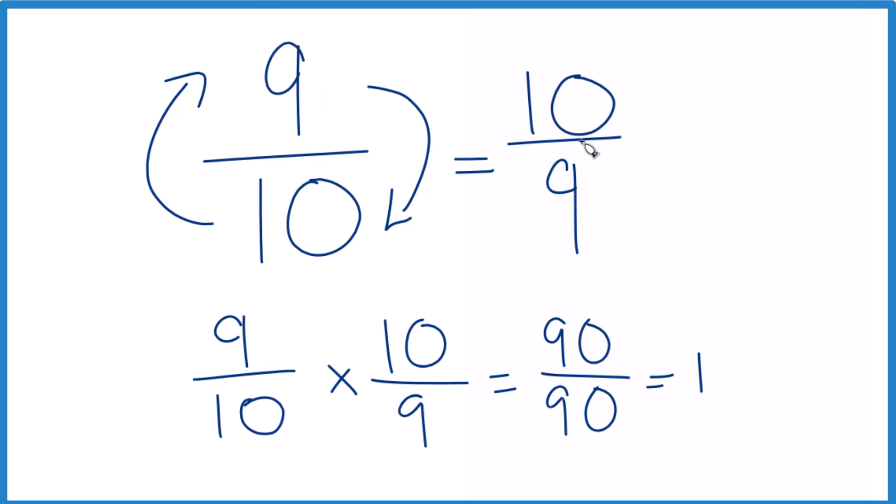This is an improper fraction, 10 is larger than 9. You could change it to a mixed number. 9 goes into 10 one time with 1 left over. Just bring the denominator across, 10 ninths, that's the same as 1 and 1 ninth.